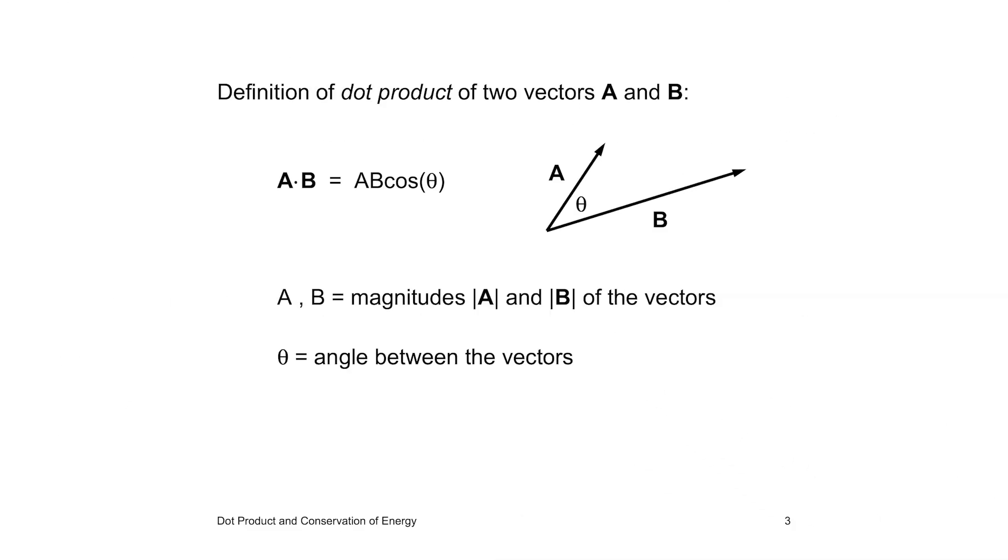The dot product of two vectors is the product of the magnitudes and the cosine of the angle between the vectors. The dot product has many applications. Here we consider mechanical examples in what is probably the single most important fact in all of physics. Energy is conserved.